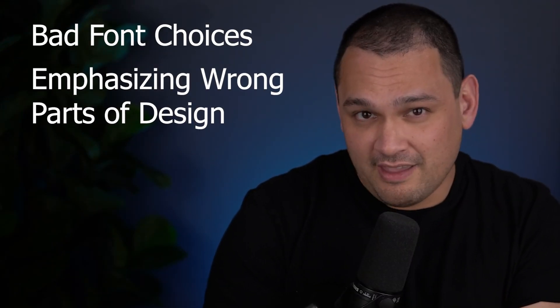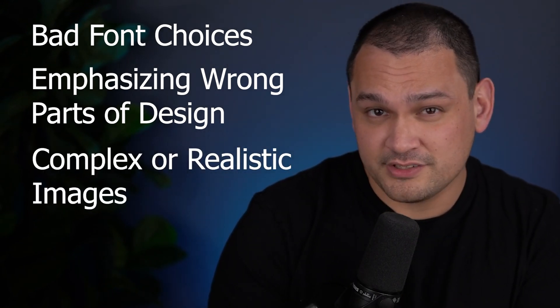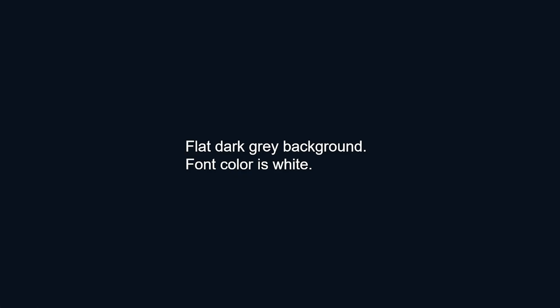Now we're going to further constrain the prompt in order to get good outputs. The main things we need to avoid are really bad font choices, the wrong things being emphasized in the design, and using images that are too realistic or complex to look good in print on demand. When we are looking at prompting AI, we are looking to provide as many useful constraints as we can find to make the output something that we could use. A lot of the final touches on this prompting process are going to depend on the niche that you are in.